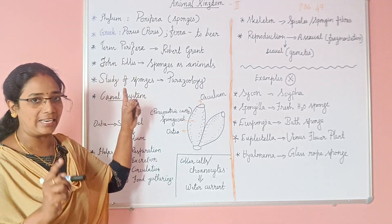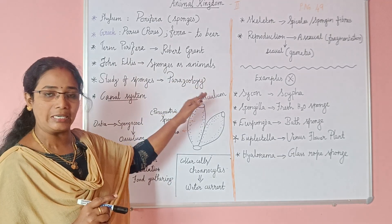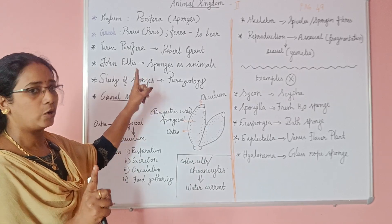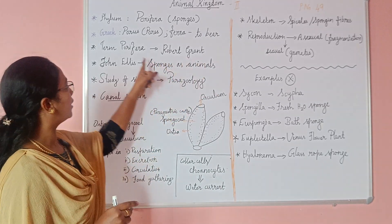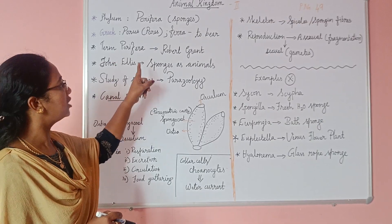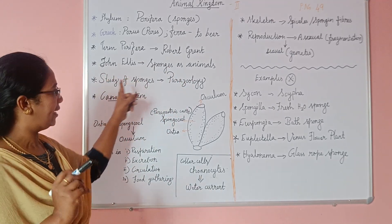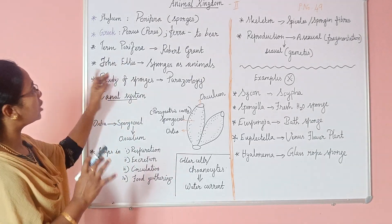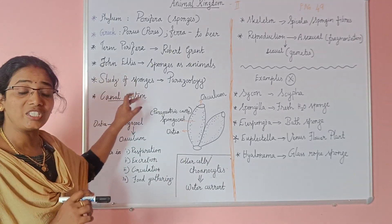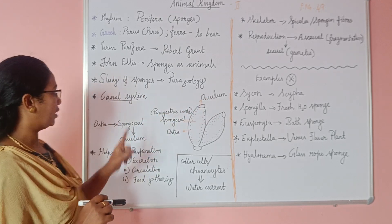The name John Ellis is important. John Ellis named the sponges. The study of sponges is called Spongiology — you can learn this branch called Spongiology.